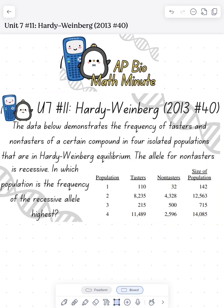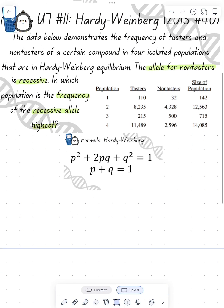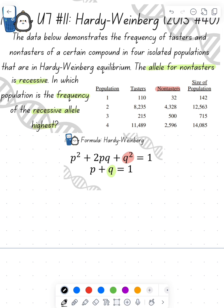So we have four different populations and they've given us the number of tasters and non-tasters, and we need to figure out which population has the frequency of the recessive allele to be the highest. Based on our formula, we know that our recessive allele is going to be our Q value. They've told us the non-tasters, which will equate to our Q squared.